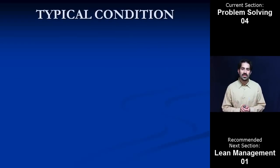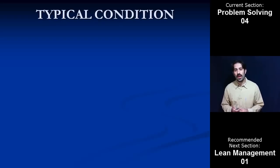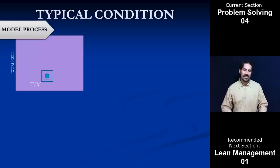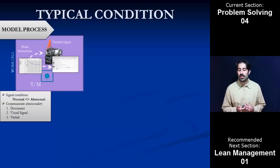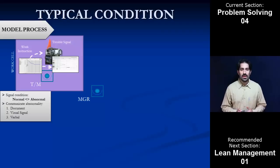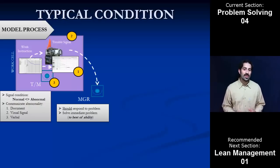To get into this, let's look at a typical condition within an organization that has done some lean work in terms of structuring their work cells and processes. Say we've got a model process — they've put in lean tools where a team member has work instructions that let him know normal versus abnormal conditions, and he has tools to communicate any issues should something come up. That team member has a manager above him, maybe managing a team of seven or ten people. When there is a problem, that team member has a couple different ways to communicate it to their manager — they can document it, signal it with an andon or visual signal, or communicate it verbally.